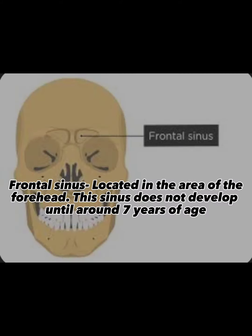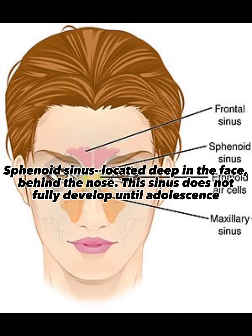The frontal sinus is located in the area of the forehead. This sinus does not develop until around seven years of age. The sphenoid sinus is located deep in the face, behind the nose. This sinus does not fully develop until adolescence.